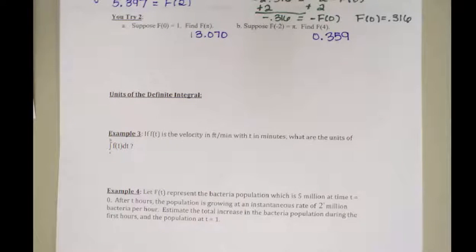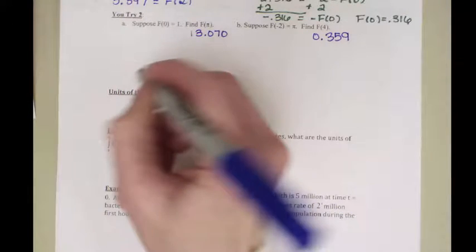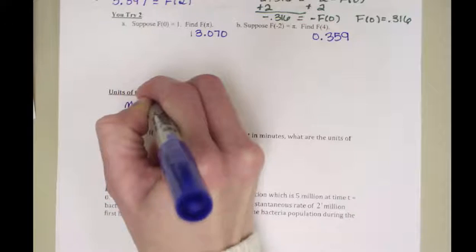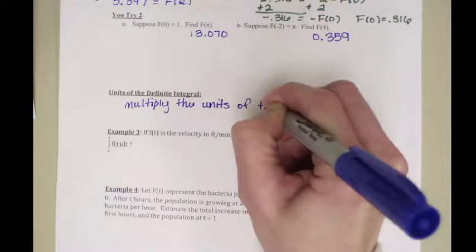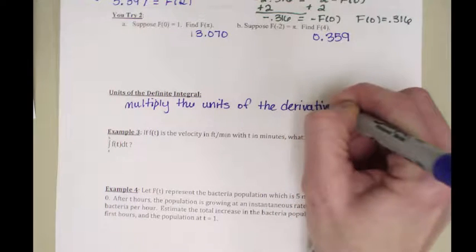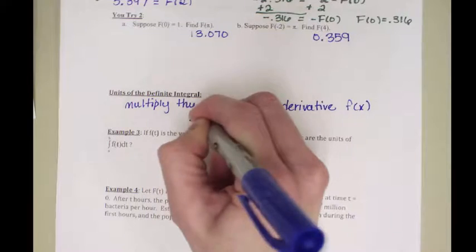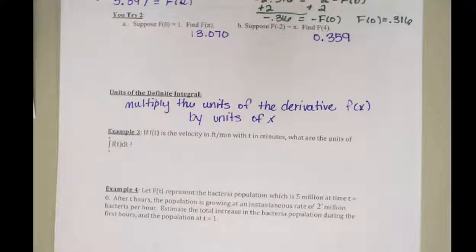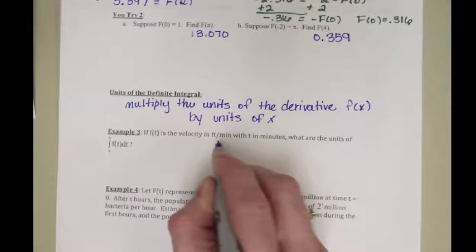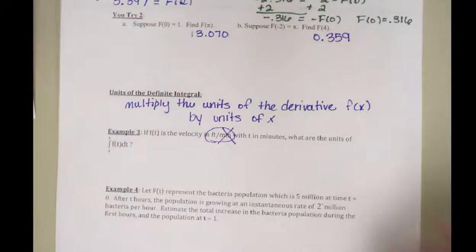How do you find the units of the definite integral? You've got to think about working backwards from a derivative. A derivative is something per something — feet per second, miles per hour. So to get back to the original function, you multiply the units of the derivative, which is lowercase f of x, by the units of x. If the derivative is in feet per second, the original function is in feet — multiplying feet-per-second by seconds cancels the seconds and you're left with feet. If the derivative is in feet per minute, you cancel the 'per' part and the original function is in feet.